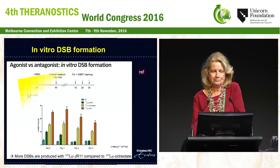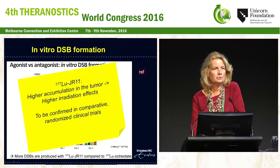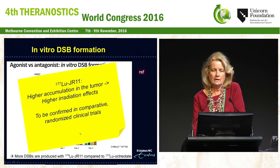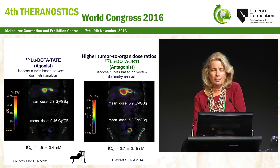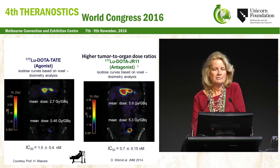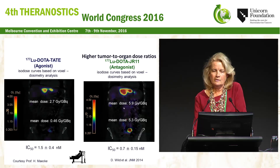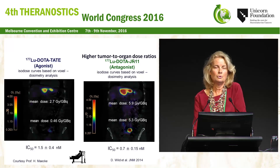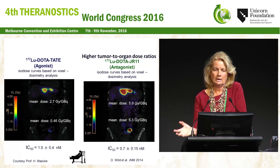The antagonist labeled with lutetium led to higher accumulation in tumor cells and higher irradiation effects — more double-stranded breaks. A pilot study compared low-dose lutetium DOTA-TATE with lutetium DOTA-JR11, the antagonist: isodose curves showed a higher dose was obtained with the antagonist, along with a higher tumor-to-organ dose ratio. The group subsequently proceeded with high-dose therapy with JR11, though there has been no direct comparison with the agonist yet — it would be interesting to see this confirmed in clinical studies.